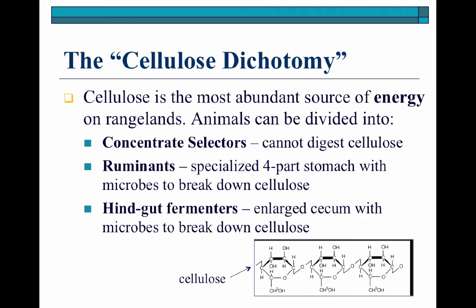One of the big controversies that ends up happening with rangeland animals, especially with activist groups that don't like to see domesticated grazing animals on rangeland, really comes back to this concept of the cellulose dichotomy. Cellulose is the most abundant source of energy on rangelands, and that cellulotic structure is shown at the bottom of this slide. It is a very complicated structure that makes up a large percentage of plants on rangeland. Only a certain number of animals can actually utilize cellulose — those are our concentrate selectors, our ruminants, and our hindgut fermenters — and the degree to which those animals can use cellulose is quite variable.